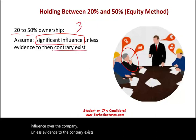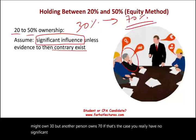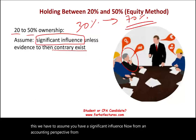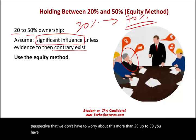For example, you might own 30%, but another person owns 70%. If that's the case, you really have no significant influence because the 70% can control everything. But in the absence of this, we assume you have significant influence. From an accounting perspective, from the CPA exam perspective, we don't have to worry about this — more than 20% up to 50% means significant influence, and under those circumstances we use the equity method.